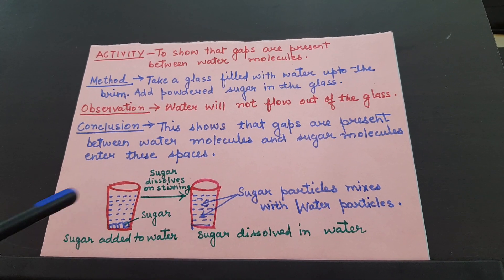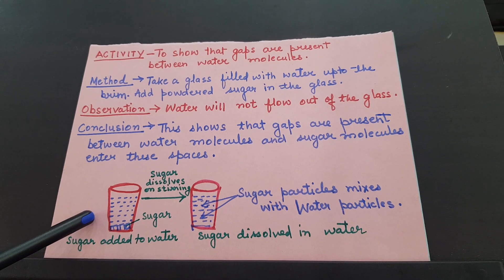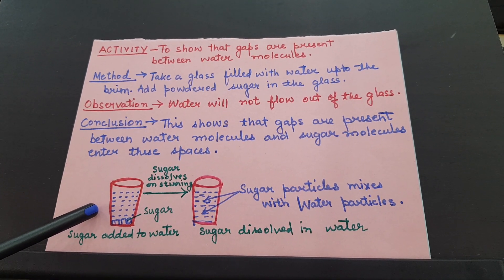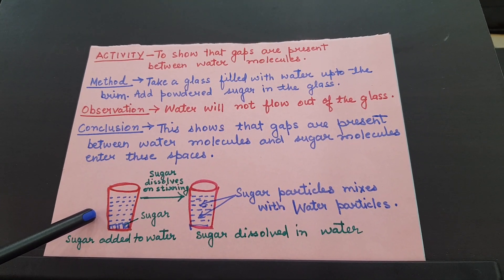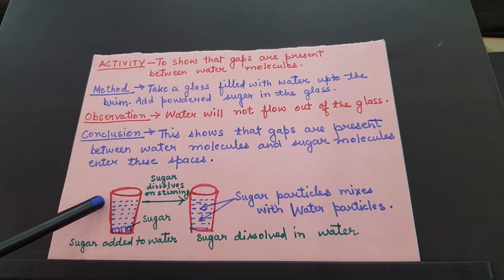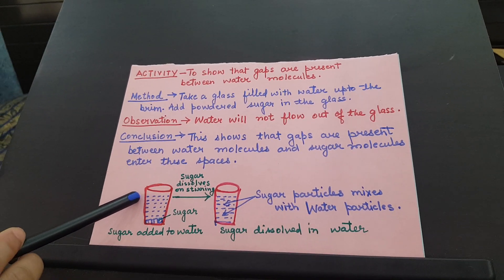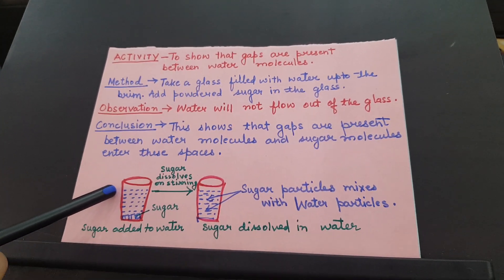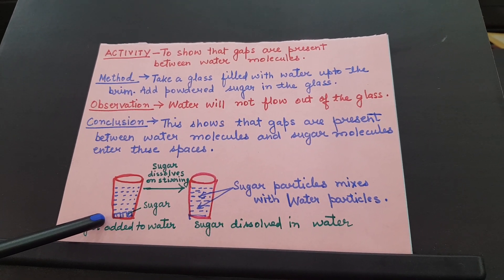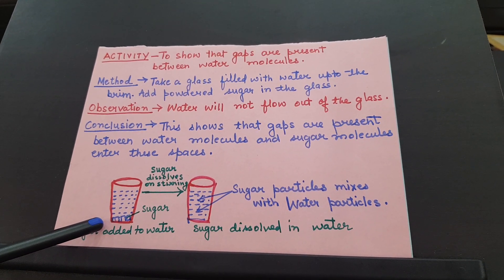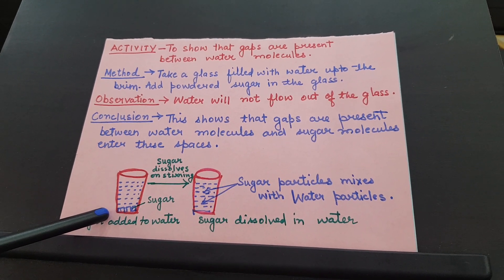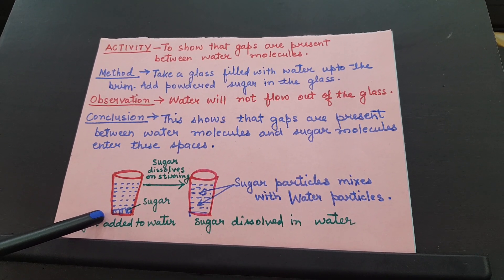In this activity, what is the method? How we are going to do this experiment — you can try at home. We will take a glass filled with water up to the brim. Brim means up to the top. Then we will add powdered sugar in the glass. What we are going to observe is that water will not flow out of the glass.